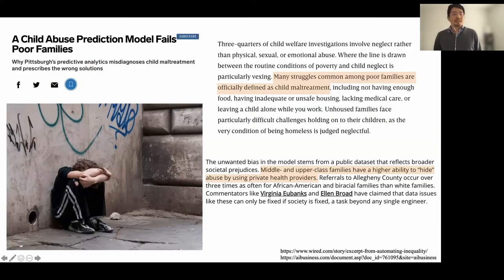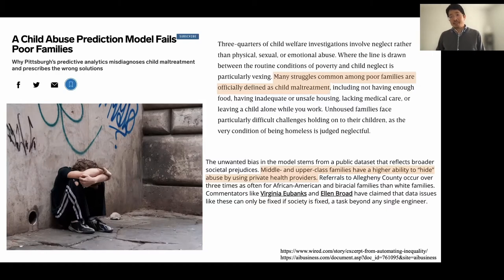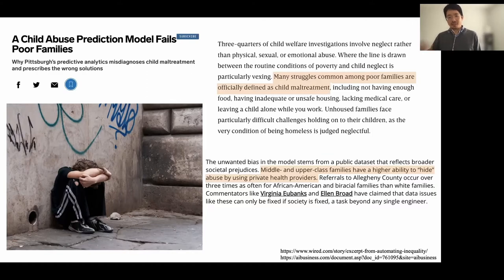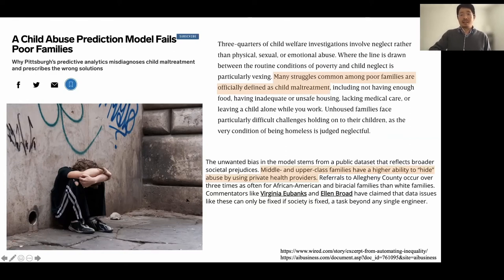This is not the only case. In 2018, data from Pittsburgh showed that because middle or upper-class families have the privilege to choose private health providers, they tend to hide more information about child abuse. The machine learning algorithm, learning only from this data, produced results that were very much against poor families — essentially marking children from poor families as being abused. That's really unfair.